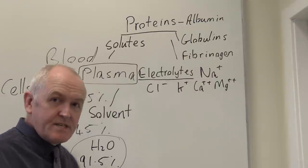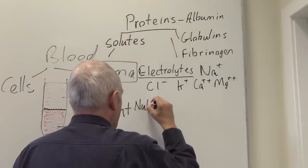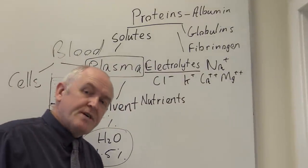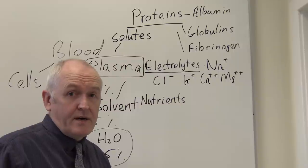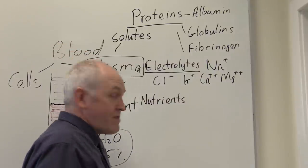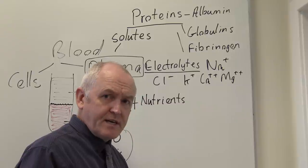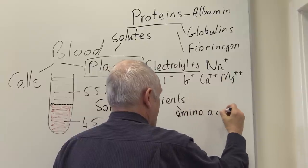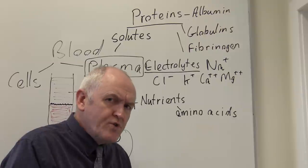So electrolytes are present as ions in solution in the plasma. We've got proteins, electrolytes, and also nutrients in the plasma. Nutrients are absorbed from the gut and travel in the blood to the tissues where they are required. For example, the breakdown products of protein digestion — proteins are broken down to amino acids — are carried in the plasma. It's also very important that there is glucose in the blood.